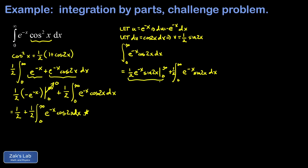First we need to evaluate the boundary term out in front. Subbing in infinity: e to the negative infinity is zero, and sine of 2x stays finite as x grows, so zero times anything finite is zero. Subbing in the lower limit gives e to the zero times sine of zero, which is one times zero, so the lower limit also vanishes. That term is taken care of, and now we need to compute the integral from zero to infinity of e to the negative x sine 2x dx by applying integration by parts one more time.